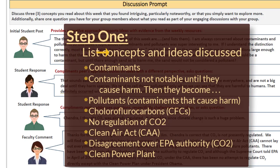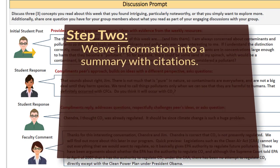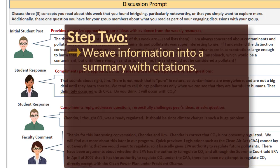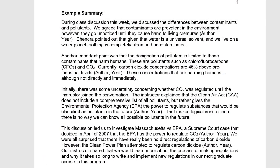After you've identified the key concepts and their sources of information, your next step is to weave the information into a coherent summary for the audience. Here's an example summary based on the list about contaminants and pollutants.